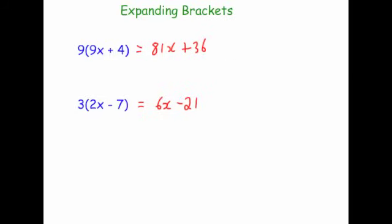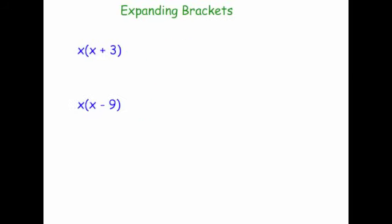Let's have a look at another one. Now these ones we've got letters outside. So x times x, well x times x is x squared. x times 3, well that's going to be 3x. So the answer would be x squared plus 3x.